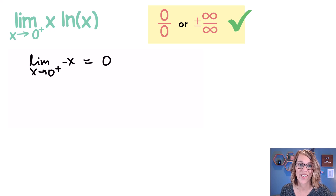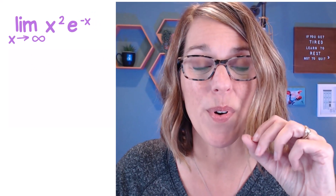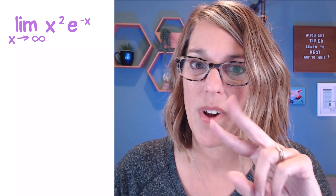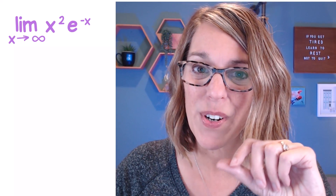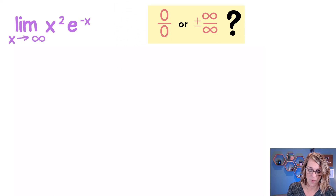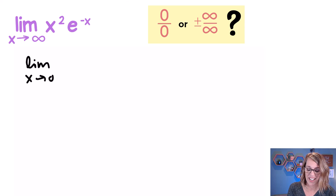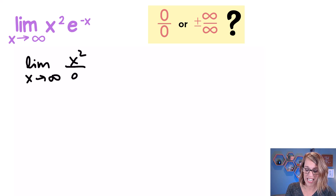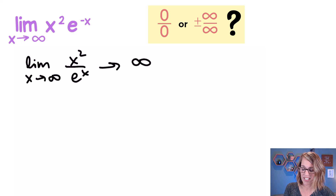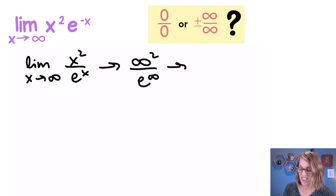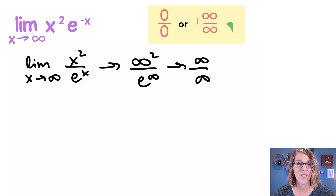So this is equivalent to the limit as x approaches 0 from the right of just negative x, which equals 0. Now this next one is super important because I'm going to need to use L'Hôpital's rule not once but twice. I want to first verify that I've got one of those indeterminate forms, so I'll rewrite the limit as a fraction with x squared in the numerator and e to the x in the denominator. As x goes to infinity I get infinity squared over e to the infinity, which definitely gives us the indeterminate form infinity over infinity.